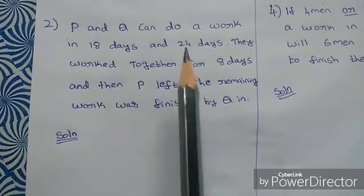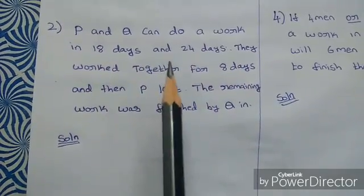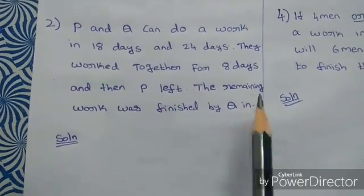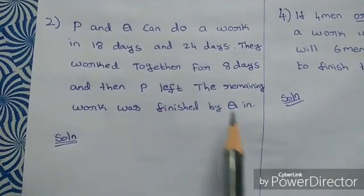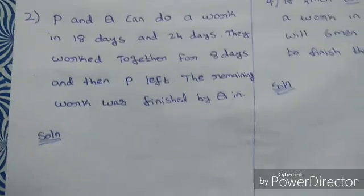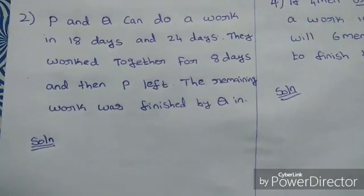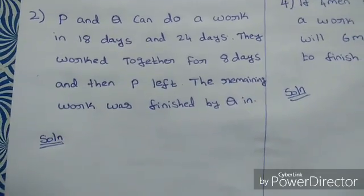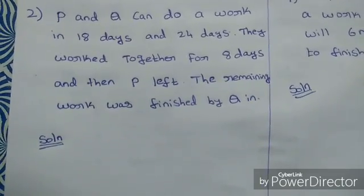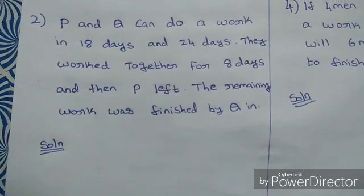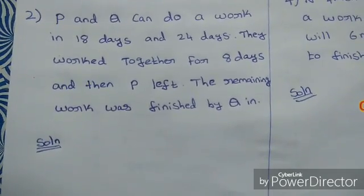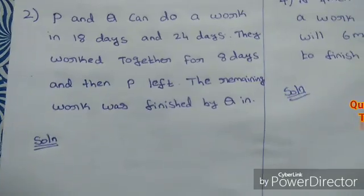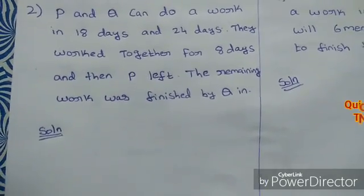P and Q can do a work in 18 days. They worked together for 8 days, and then P left. The remaining work was finished by Q. What if this is the next level? You have to work with each other. You have to make each efficiency. If efficiency of P is given, Q is given as 24 hours. Then we do some math and efficiency.